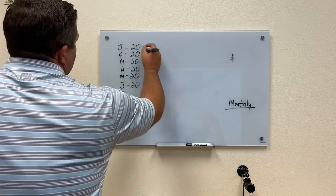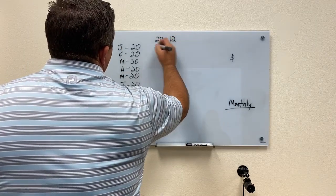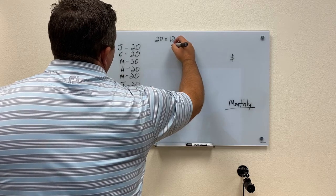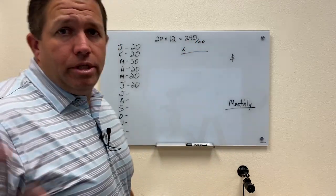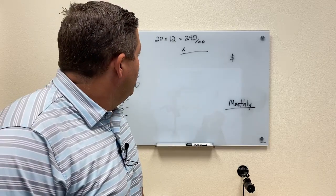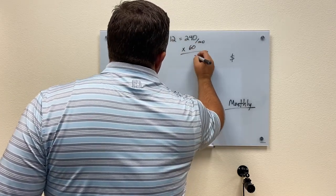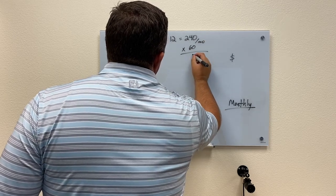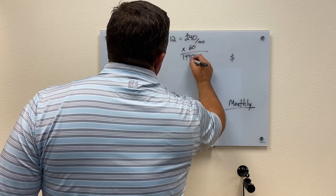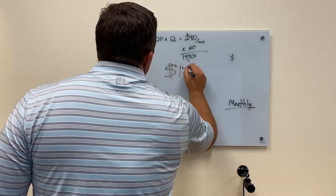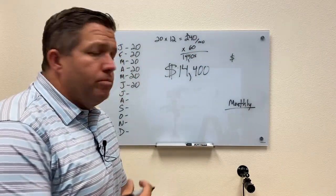If we see each patient for 12 visits, 20 times 12 equals 240 visits per month. And if we say that each patient visit is—I don't know what to use as an average—let's say a cash visit is $60. So we get 6 times 0 is 0, 6 times 4 is 24, carry the 2, that's $14,400 if you're collecting $60 per visit.